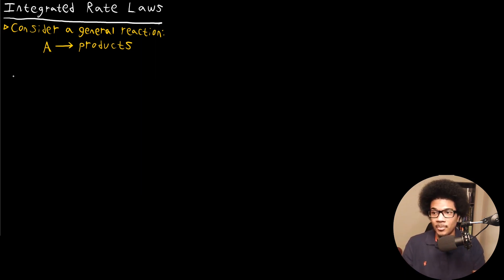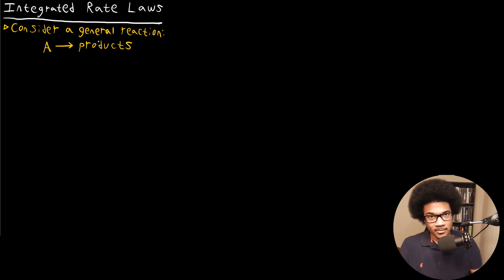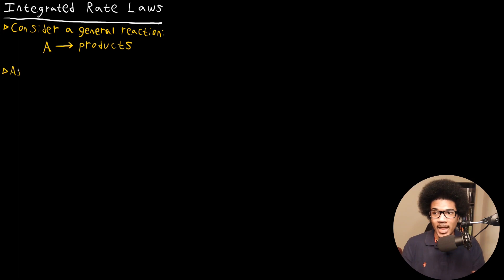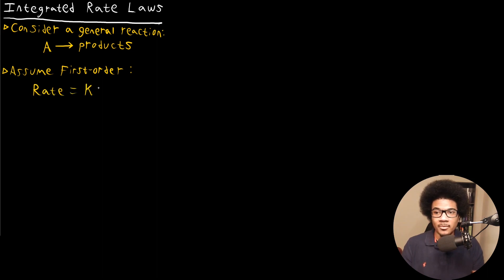Let's show this. If we have a general reaction — say some reactant A that forms some products — we can build out the rate of the reaction. If we assume a first order reaction where A yields products, then we know that we can write out the reaction rate as the rate constant times the concentration of A raised to the first power.